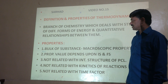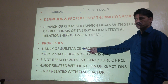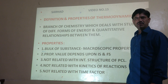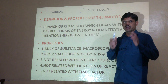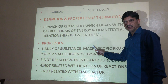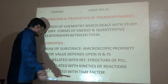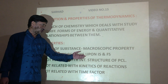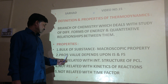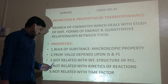Now, the properties of thermodynamics. The first property: due to the bulk of substance, thermodynamics is known to be a macroscopic property. As we discuss substance in larger quantities, thermodynamics is a macroscopic property. The second property: in thermodynamics, the property value depends upon the initial state and the final state.